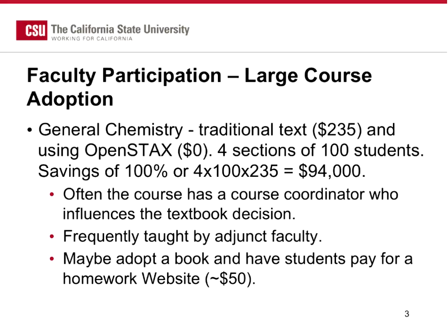Let me run through a couple of example breakdowns of how the affordability calculations work. Take a large course adoption — general chemistry — where the preceding semester instructors assigned a traditional text costing students $235. As part of your open textbook adoption incentive plan, you adopt instead the OpenStax chemistry textbook, which can be printed and bound or available online. With four sections of 100 students, you drop the textbook cost from $235 to zero, achieving about 100% savings, or $94,000.